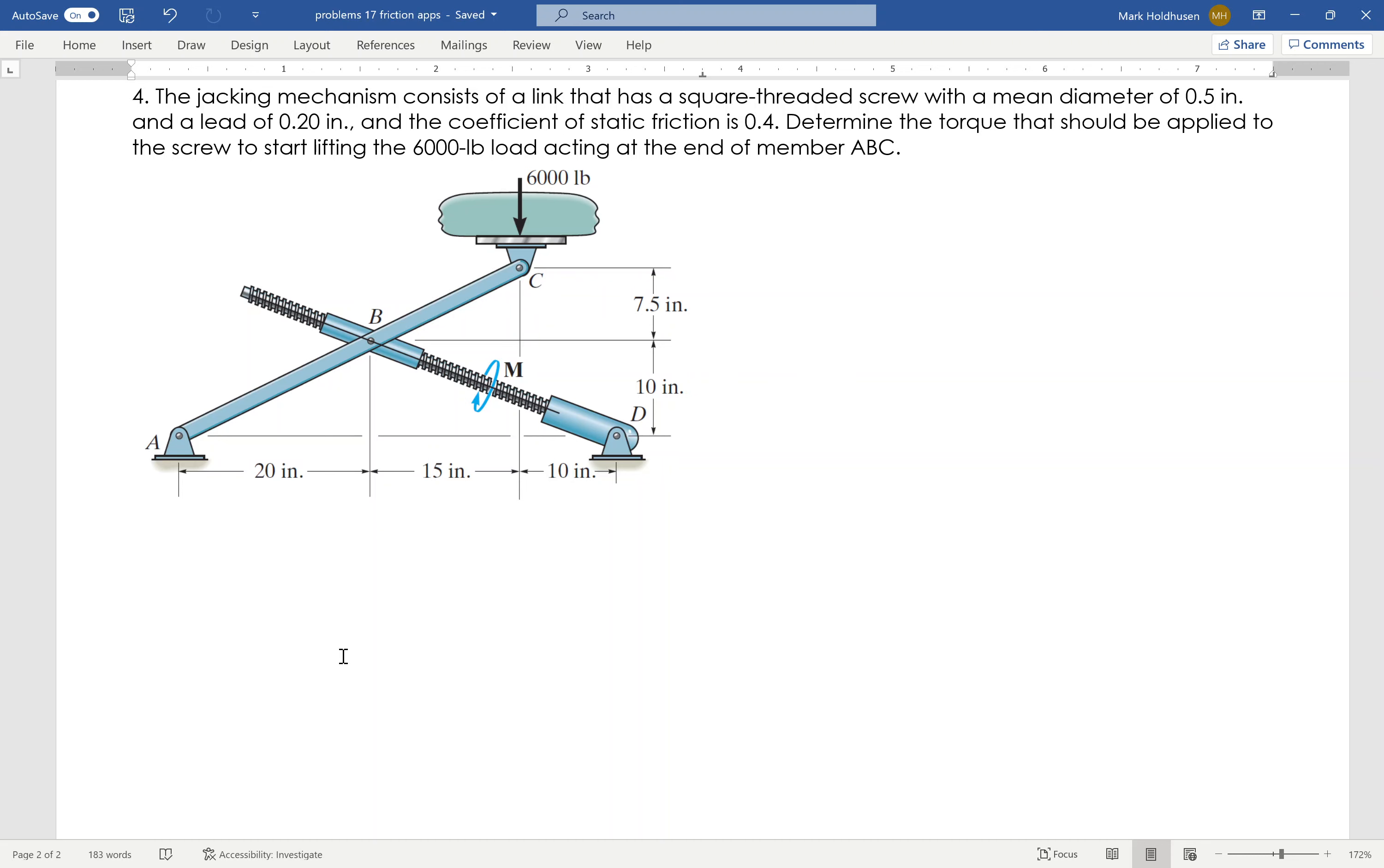So we're going to start with finding that load. Again, I'm working against the load, so I'm going to add the two angles together. I'm basically tightening this thing down. That'll be tangent of theta plus phi_s.